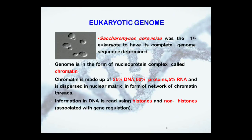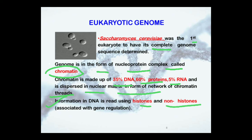If we go into the details of the eukaryotic genome, Saccharomyces cerevisiae was the first eukaryote to have the complete genome sequence determined. The genome is in the form of a nucleoprotein complex called chromatin. The composition of chromatin is 35% DNA, 60% proteins, and 5% RNA. It is dispersed in the nuclear matrix in the form of a network of chromatin threads. Information in the DNA is read by using histones and non-histones, which are also associated with gene regulation.